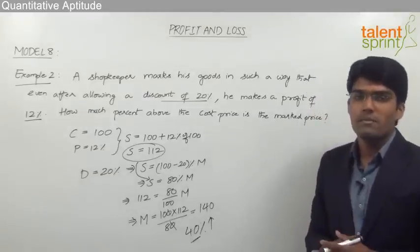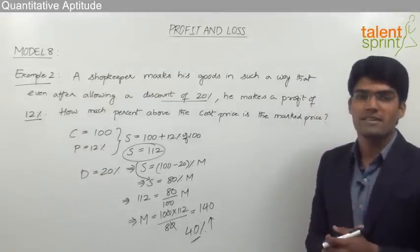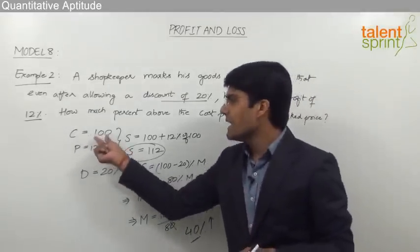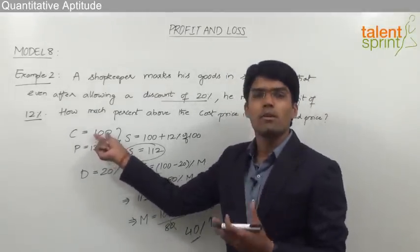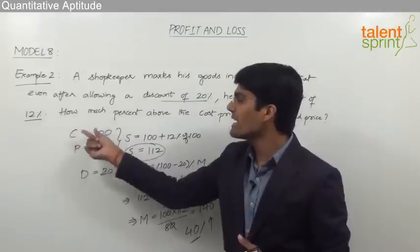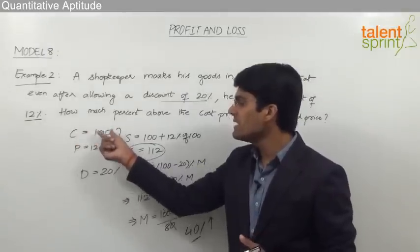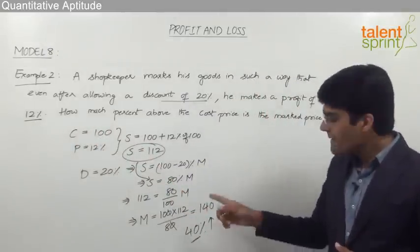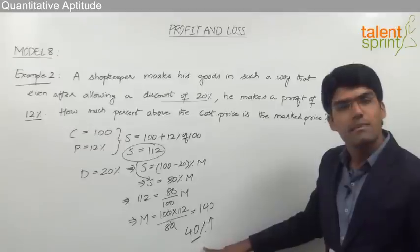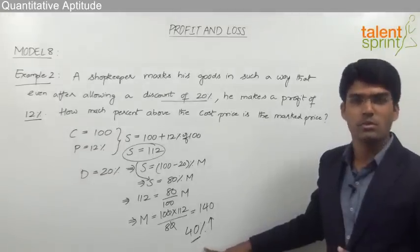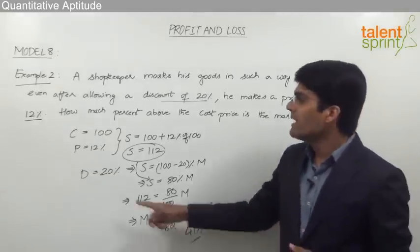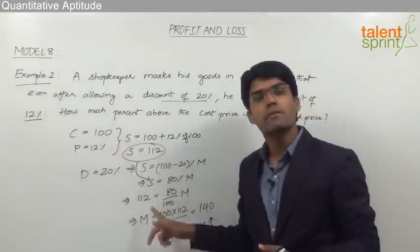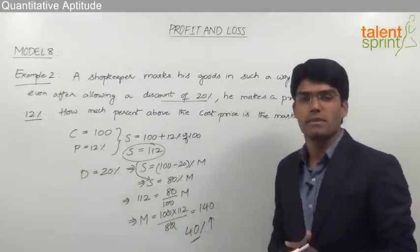As mentioned in the topic of percentages, we can start with any value — it need not be 100. We could assume cost price is 80 and do the calculations accordingly; the final answer remains 40%. But it is always suggested to start with 100 so that the calculation becomes simple.